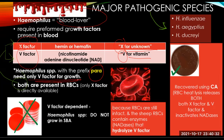Both X and V factors are present in red blood cells, but only the X factor is directly available. V factor-dependent organisms do not grow on SBA because the RBCs are still intact — the sheep's RBCs contain enzymes called nadases that hydrolyze the V factor. For species with the prefix 'para,' they only need the V factor for growth. Clinical laboratories utilize chocolate agar for the recovery of Haemophilus species from clinical specimens, because lysing of the RBCs by heat releases both X and V factors and inactivates the nadases.